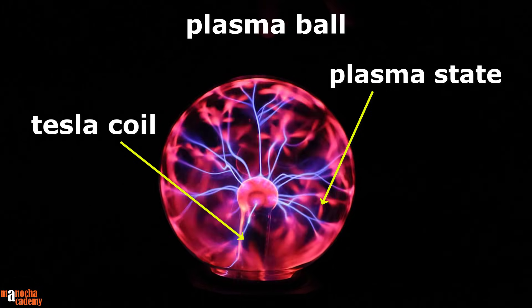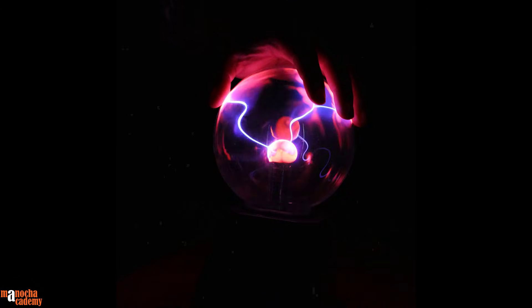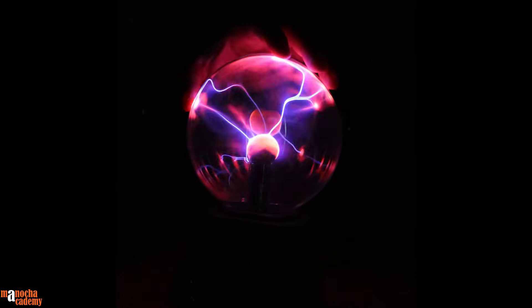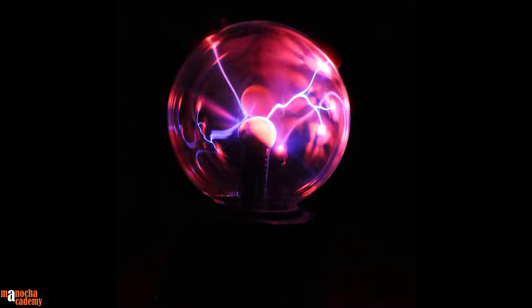This plasma ball should not be touched with wet hands or a metal or hard object, since it contains a high voltage coil. When I touch it with my fingers, you can see that the lightning patterns follow my fingers as a very small current passes through my body.